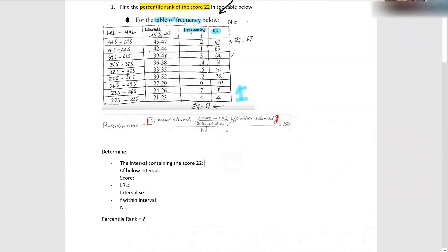If you look at all the intervals here, which interval contains the 22? If you just guess, which interval will have the 22 in there? The interval — that means the whole thing, like from 45 to 47 or from 20 to 26 — which one contains the 22?